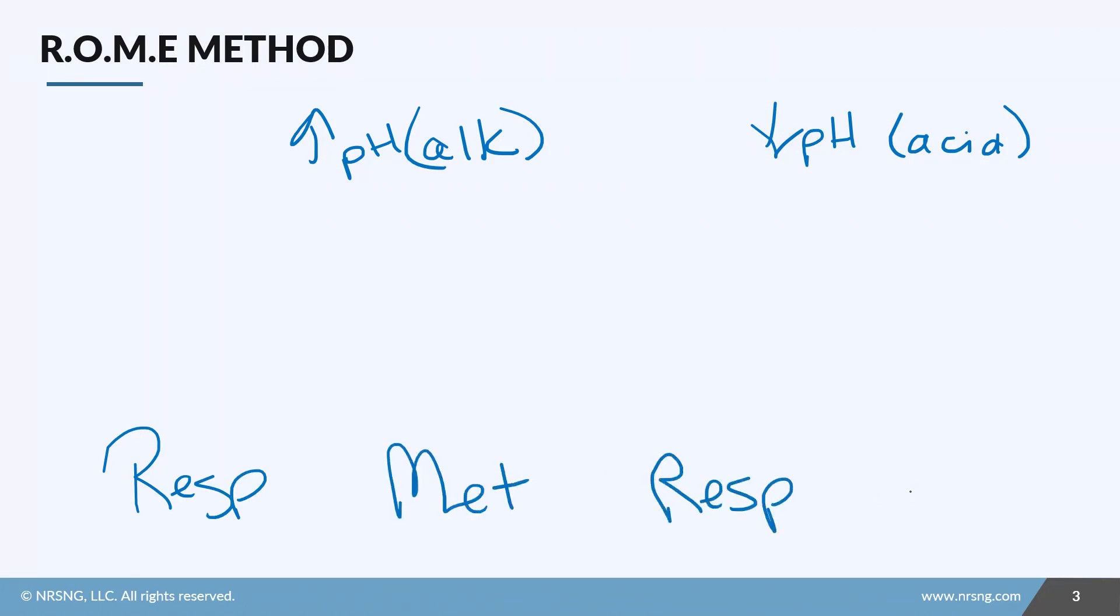So you could have a respiratory alkalosis, a metabolic alkalosis, a respiratory acidosis, or a metabolic acidosis. So when we talk about opposite and equal, we're looking at these arrows. Again, just why some people call it the arrow method. So respiratory is opposite.